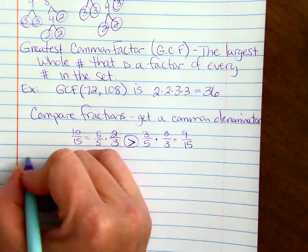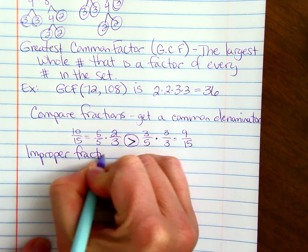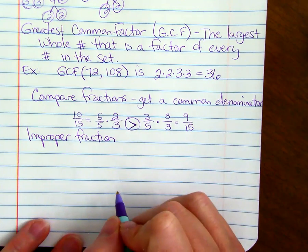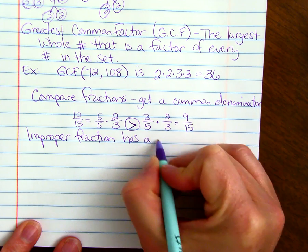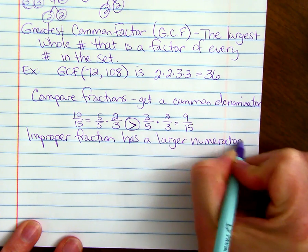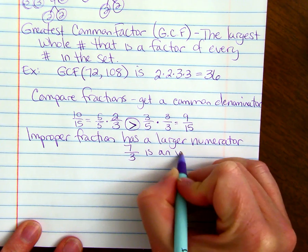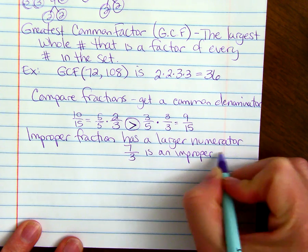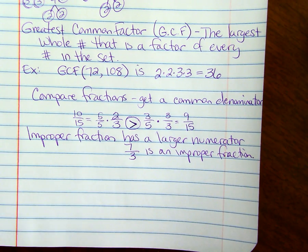An improper fraction has a larger numerator. An example would be 7 thirds is an improper fraction. It has a larger numerator.